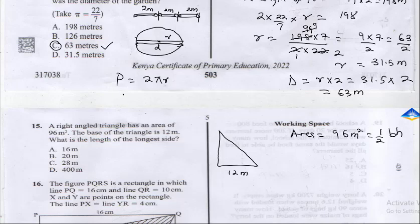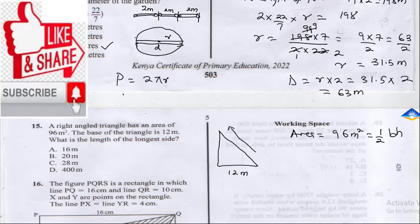We want to get this length — the length of the longer side. Let's call this L. We know the base from this formula, so let's find the height. So, 96 is equal to half times 12 times height.